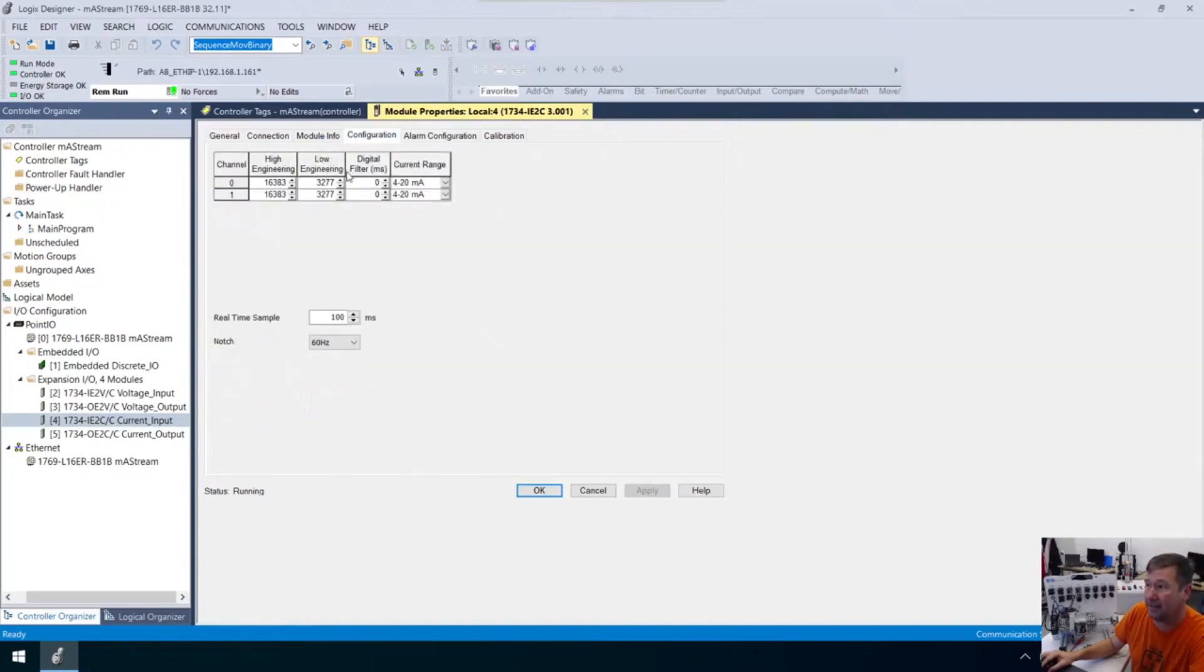And if we look at it, here it is. Our low engineering is 3277, and our high engineering is 16,383. Now, this is one of those that we need to do a little math on. And I know a lot of times when I start saying math, I get glazed over looks. But really, if we walk through this slowly, then I think we can do it. And hopefully, I have enough of what we need down here to walk through this math.